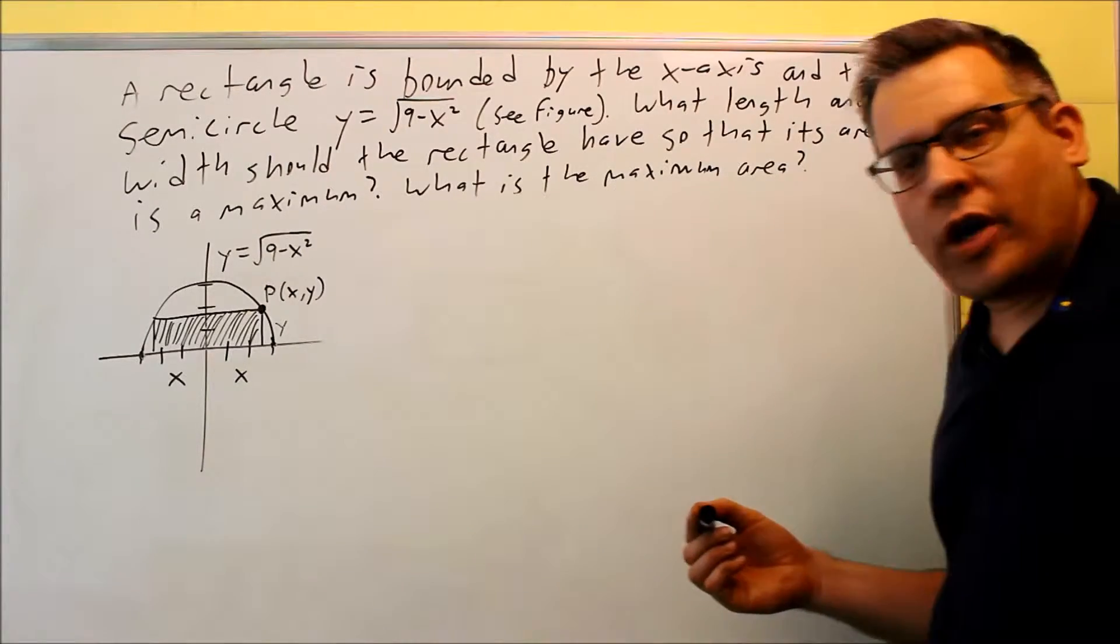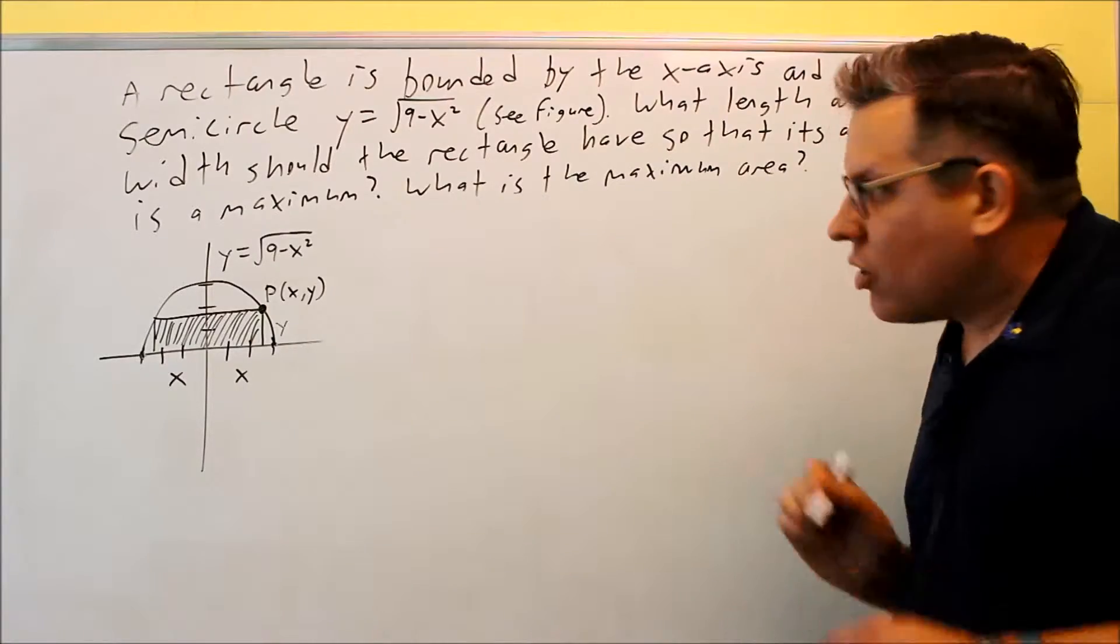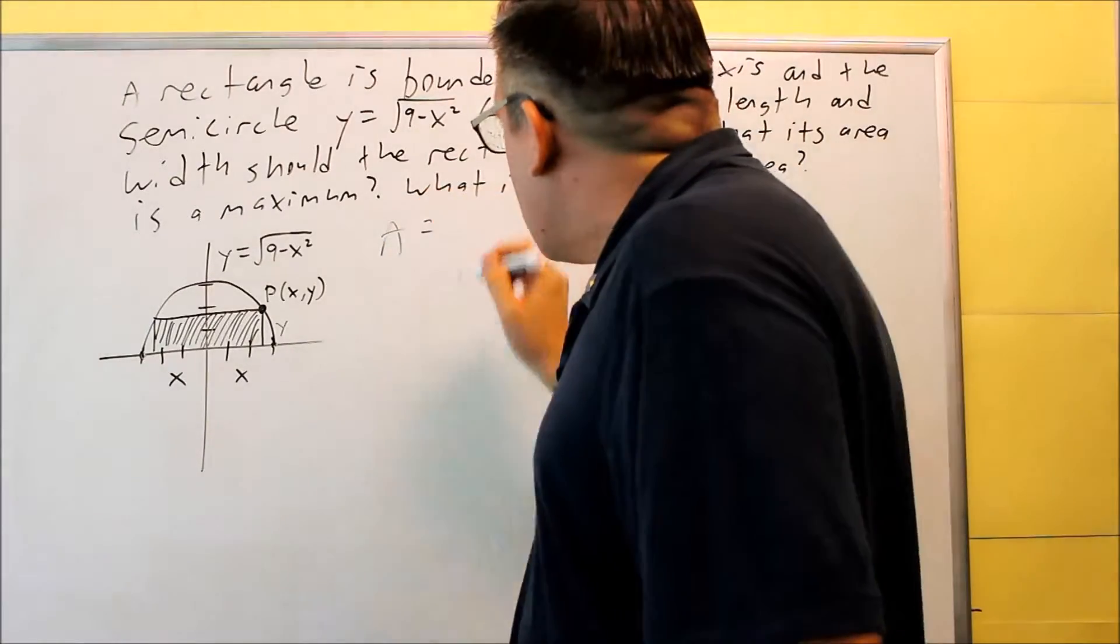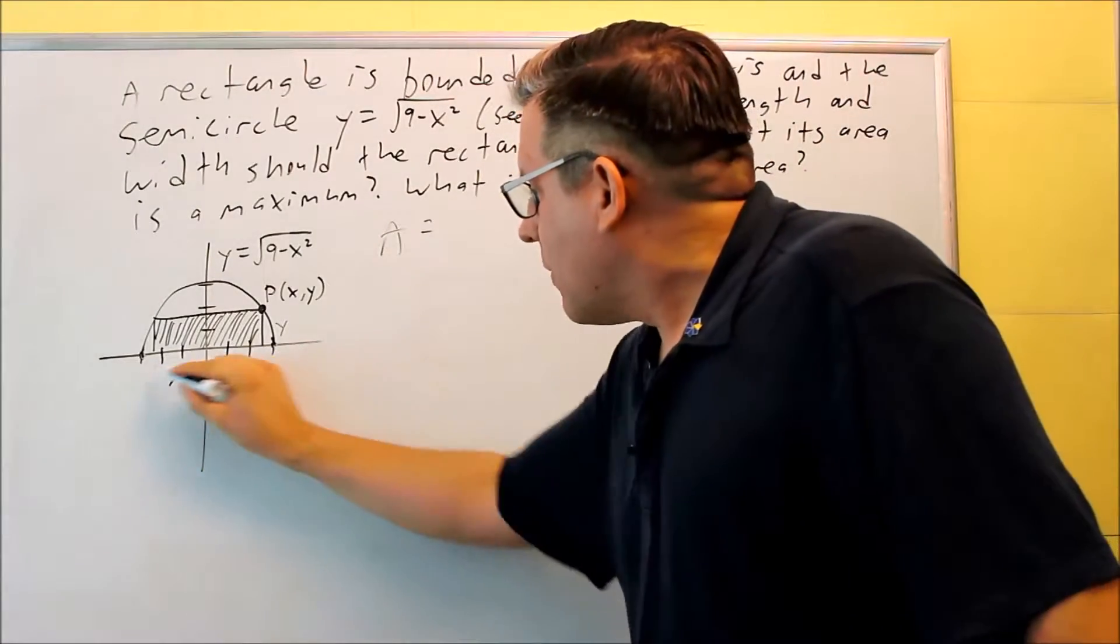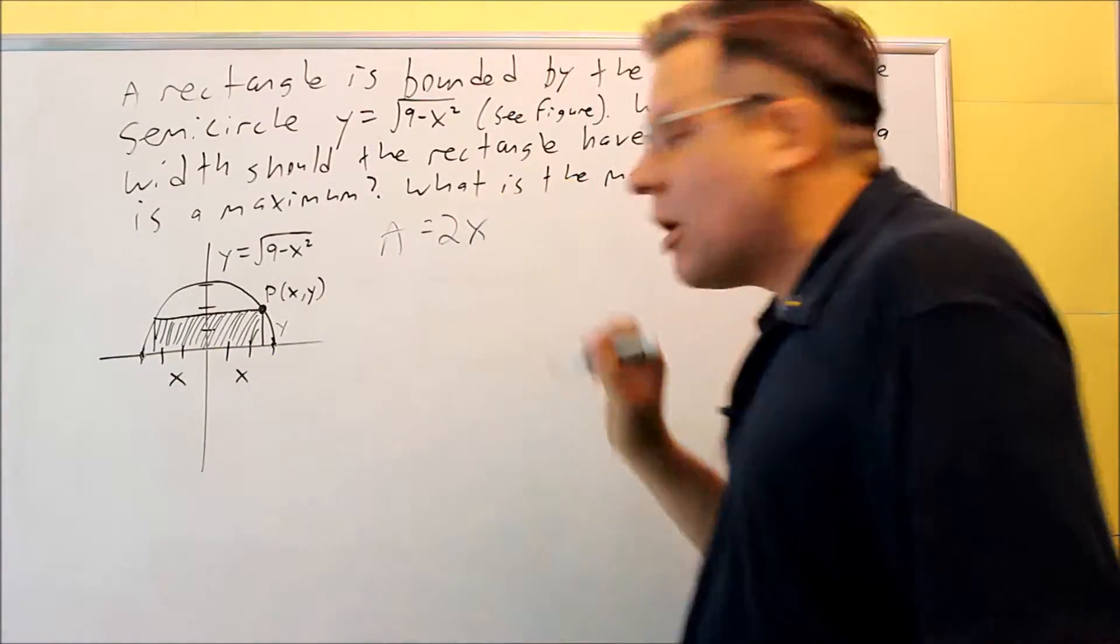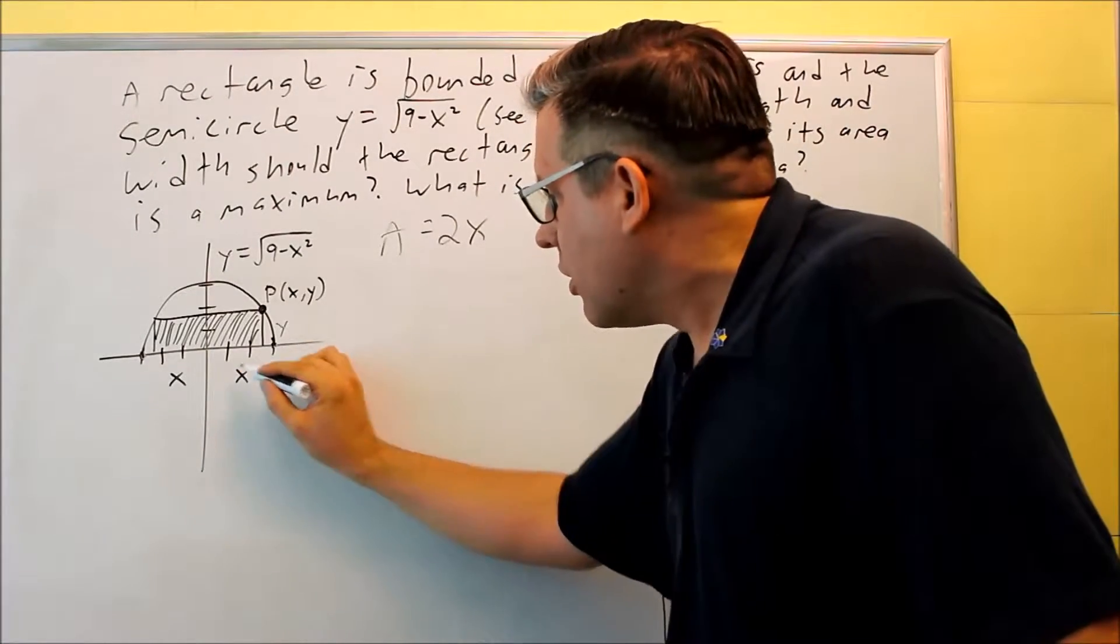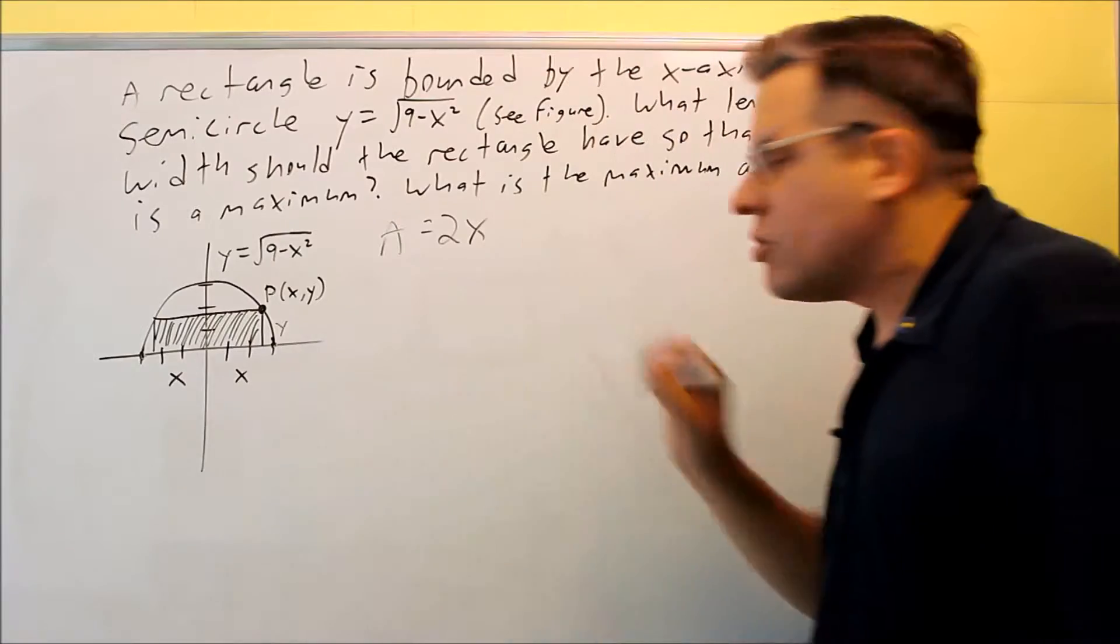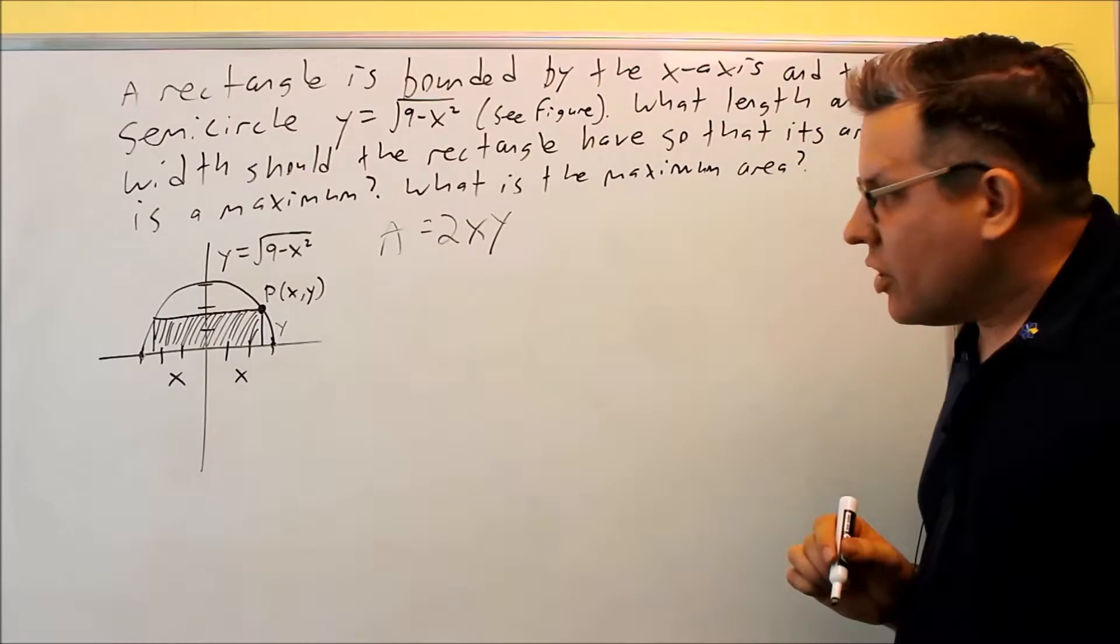First thing you want to do is set up your equation. So because it's asking you for an area, we've got to set up an area equation. Now area is equal to length times width. In our problem right here, the length is going to be, you've got to be careful here, it's 2x, not just x, because x goes from here to here, so if you want the whole length, it's going to be 2x. And then times y, and that's going to be the width of the rectangle.